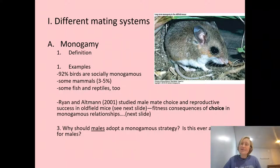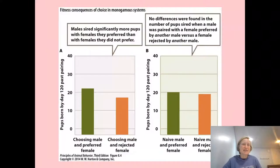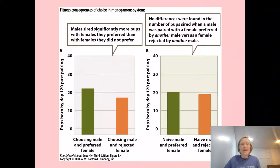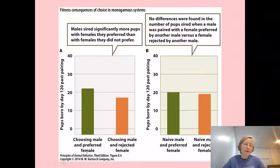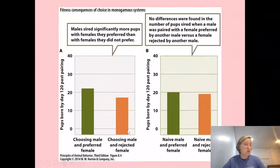Researchers Ryan and Altman studied male mate choice because males have a strong investment in parenting and should be choosy about mates. In the experiment, a male was allowed to choose between two females. Researchers then paired the male either with his preferred female or his rejected female, let them breed, and found that males sired more pups when paired with their preferred female.